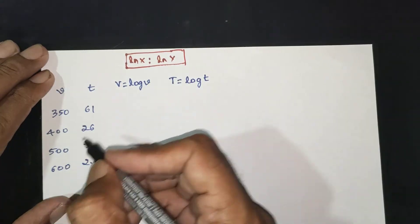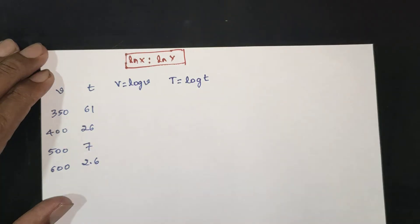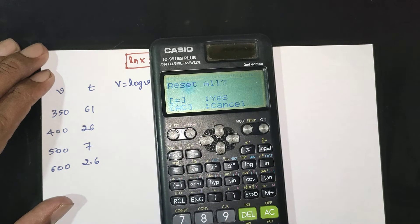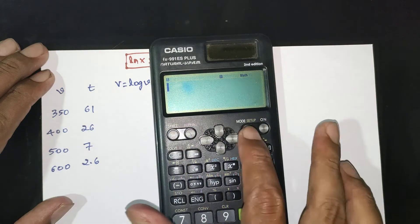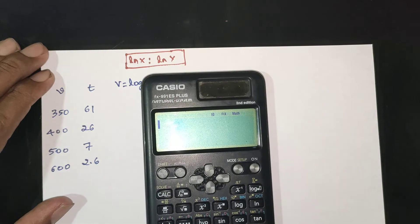Now we are entering x and y values into the calculator. We will first clear, shift to mode 9, 3. Set four decimal places. Now we have land x.